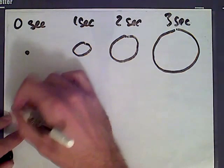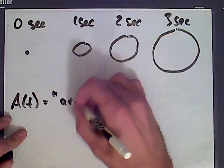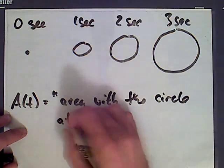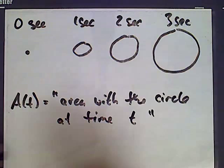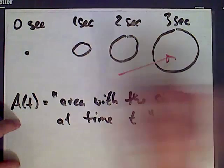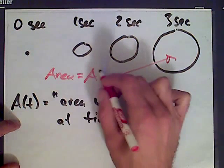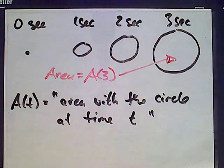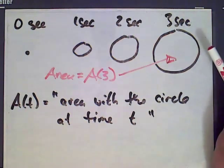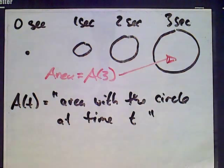So let A(t) denote the area within the circle at time t. For example, this area here, the area of this circle equals A at time t equals three. Now what you can see is that at a given point in time, the area is changing. It's getting bigger. So we want to know the rate that this area is changing at the instant of three seconds after the stone was dropped. That's going to be the derivative of A(t) at the time when t is three.